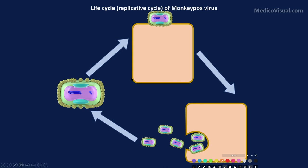In a nutshell, the replicative cycle of a virus is the series of changes that occur after the virus enters the cell and generates a new generation of virus progeny. All these changes — from the attachment of the virus, entry into the cell, what changes occur within the cell, and the release outside the cell — constitute the replicative cycle. Today our focus is the monkeypox virus.